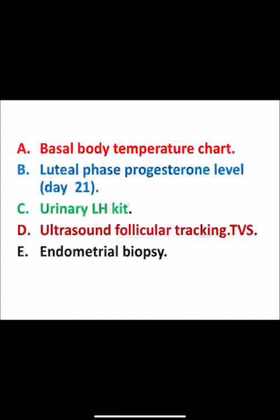The second investigation is luteal phase progesterone level: serum progesterone is measured on day 21 of the menstrual cycle. A level of more than 15 nanograms per mL is consistent with ovulation, while more than 30 nanograms per mL confirms ovulation. The third test is the urinary LH kit — as we explained, there is maximum LH secretion at mid-cycle when the follicle reaches full maturity, and this LH surge appears in the urine and will be detected as positive by the LH kit.